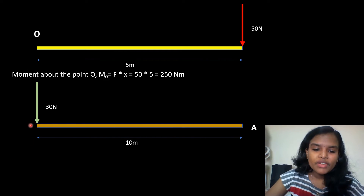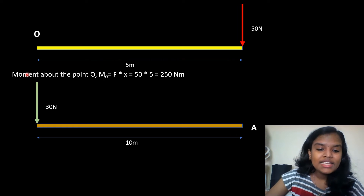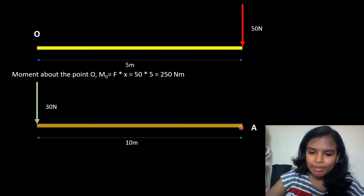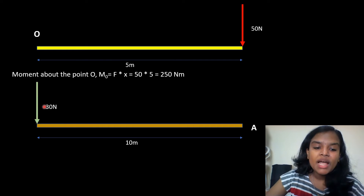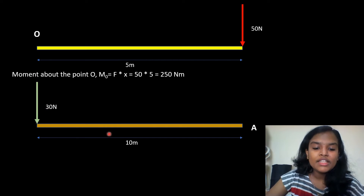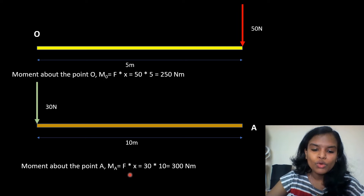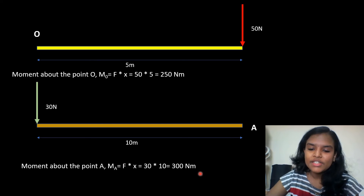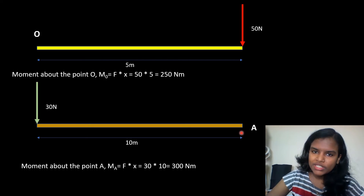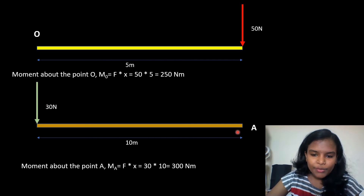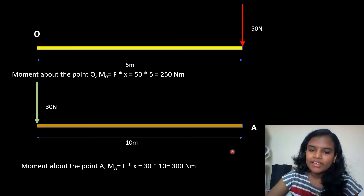The next example: here we consider a beam at the end with a 30 N force, and we calculate the moment. Moment equals force into distance. Force is 30 N and the perpendicular distance is from the line of action. So the moment about the point M = force × distance = 300 Nm, in the clockwise direction.